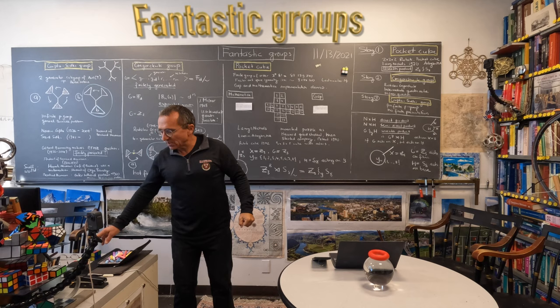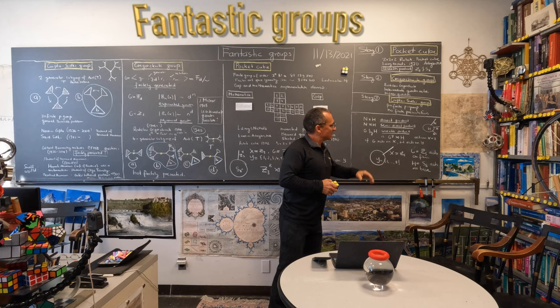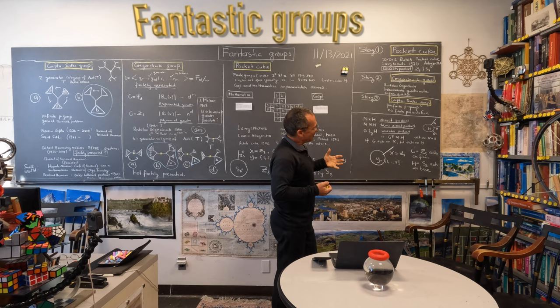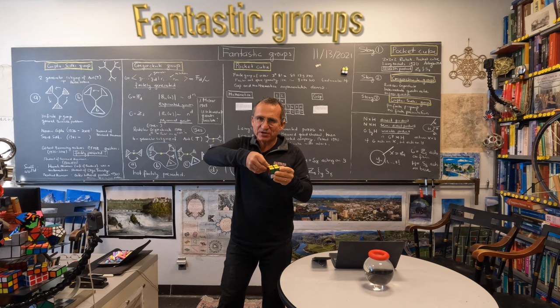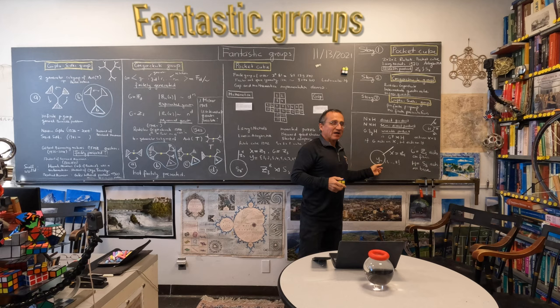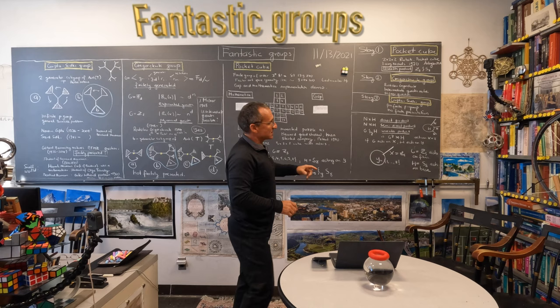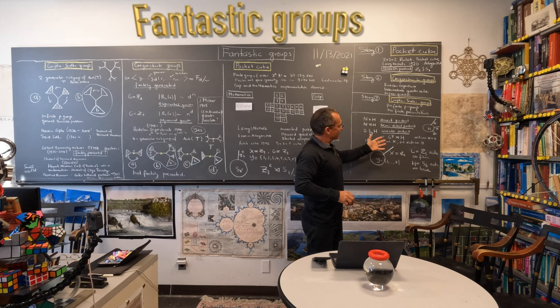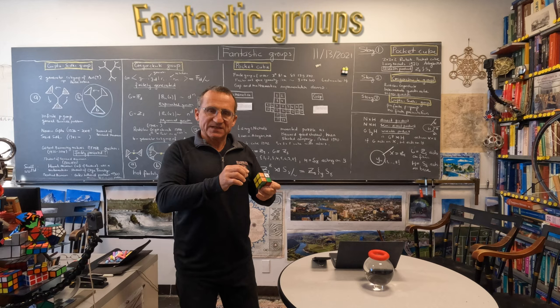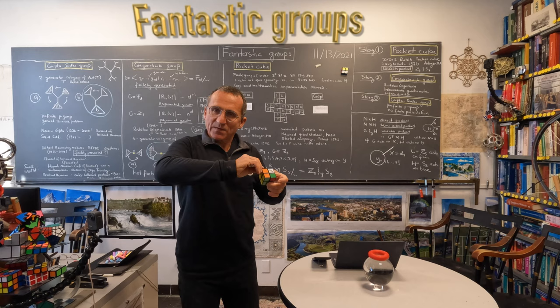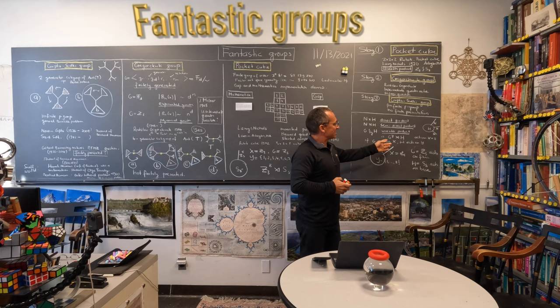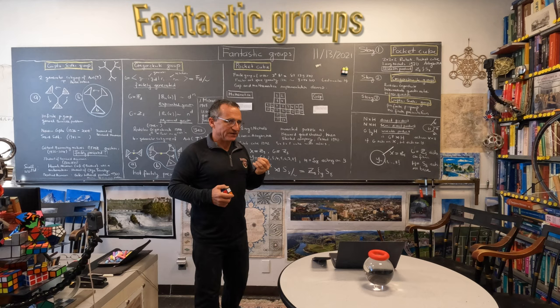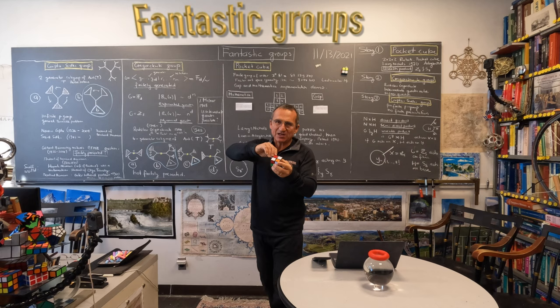This is a pretty cool example illustrating that the Wreath product is natural. What you have is: if you have a space X like Z3 — the turning on the space of three elements which just rotates around — and then on the base you have all the rotations of the cubes, which is the symmetric group S8. The Wreath product is a permutation on the product — it's actually a semi-direct product where the base is S8.